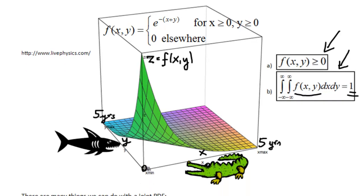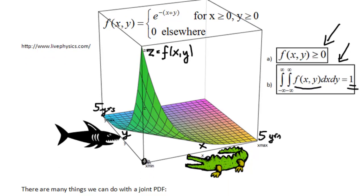So visually, for the second condition, we need to verify by solving this double integral that the volume under the surface is actually summing up to 1.